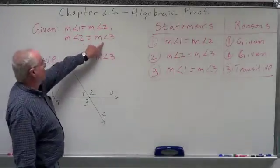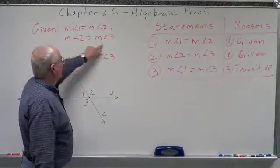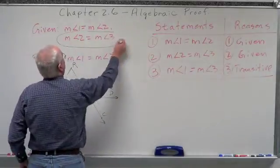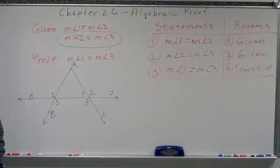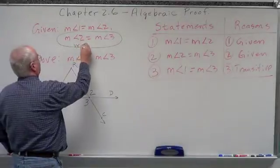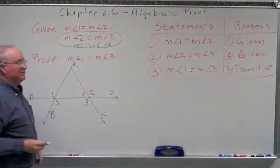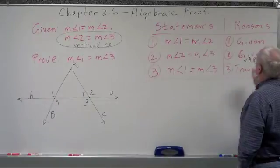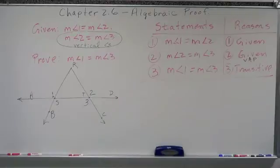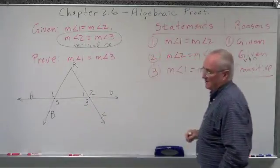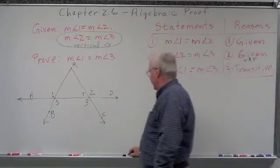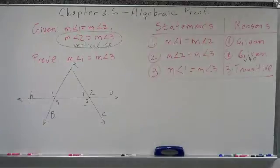Now, if they had not given us that, how could we have said this? How could we have said angle 2 equals angle 3 if they had not given us that? Those are vertical angles, aren't they? So another reason for 2 and 3 is also they're given, so we don't have to prove it — they told us. But one way that we know angle 2 and angle 3 are equal is because of the vertical angle postulate — good old V-A-P, vertical angle postulate. Let's do another one.